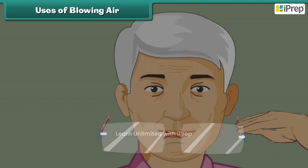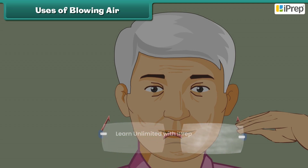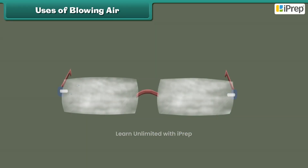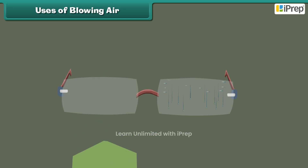You must have seen your grandfather blowing on their spectacles to wipe them clean. The air blown from the mouth is hot, and the glass of the spectacles is comparatively cold. The hot air breathed out contains water vapors, which turn into tiny droplets of water when in contact with the colder glass, making it moist and hazy so you can wipe it clean.